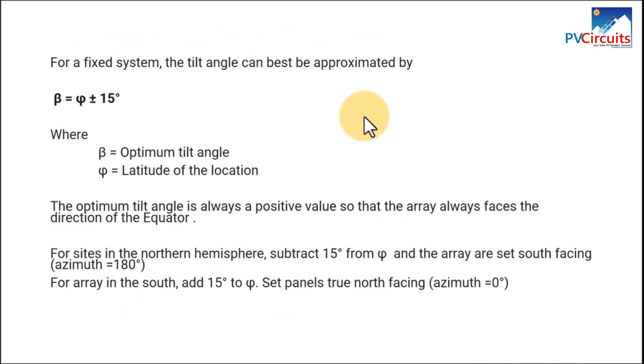So in order to get our tilt angle, and we are looking at a fixed system in this case, the optimum tilt angle is given by this equation here where we are saying optimum tilt angle, that is β, is equal to the latitude of the location which we have given φ, then either plus or minus 15 degrees. So let us understand this.